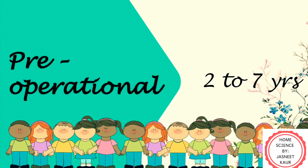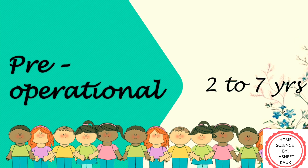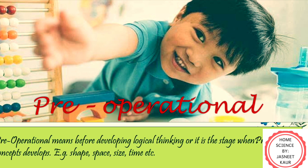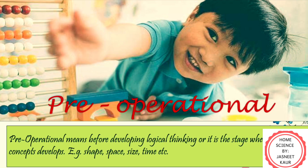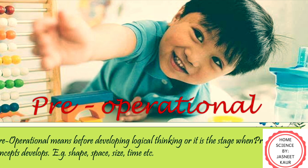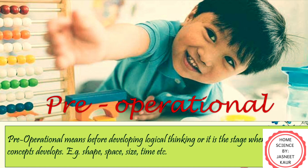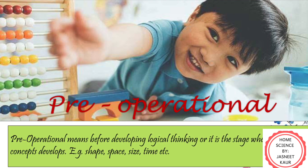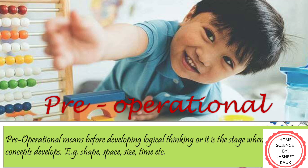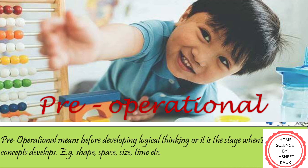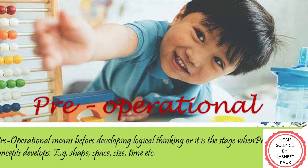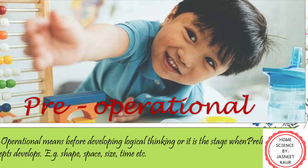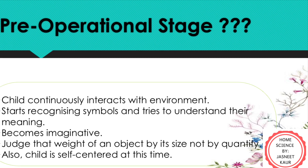Now let's get started with the second stage, which is the Pre-operational stage, and this one is between 2 to 7 years. The question is: why is this stage known as the Pre-operational stage? It is said so because it is the time when the child develops basic concepts related to shape, size, space, and time. Also, at this age, the logical skills of children are not fully developed. Hence, it is called Pre-operational — meaning before developing logical thinking.